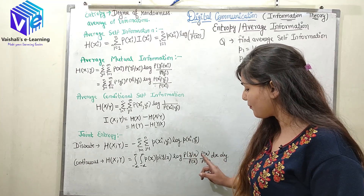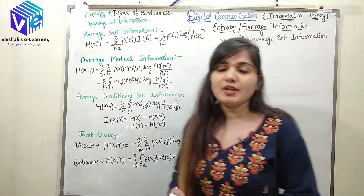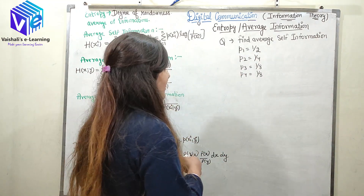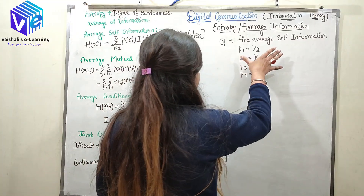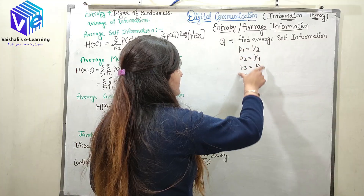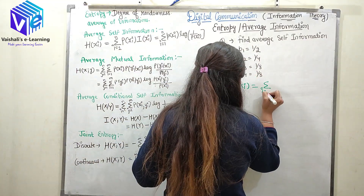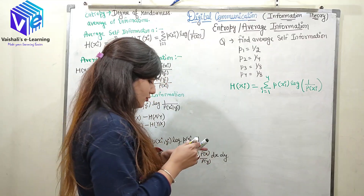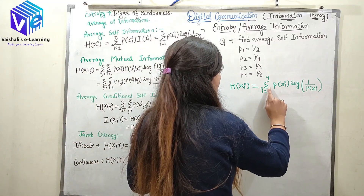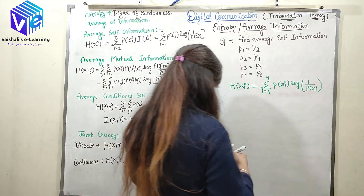Now let's look at a quick example based on average self-information. The question is: find the average self-information for four symbols whose probabilities are given. Using the formula with n=4, H(x) = summation from i=1 to 4 of p(x_i)·log[1/p(x_i)].